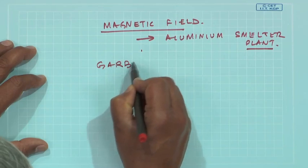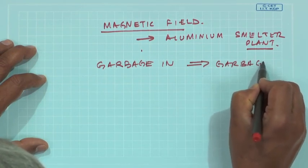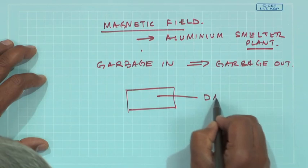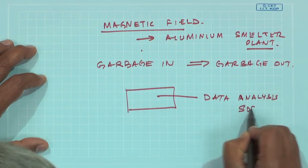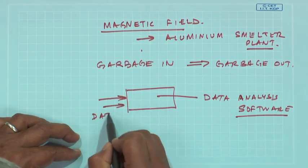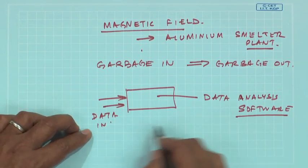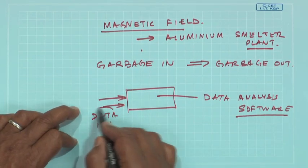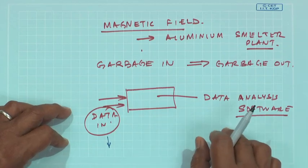As they call garbage in is garbage out, because if you look at the software available today for data analysis, they will work on the data in. Nowadays smart analytics have come up where they can tell you whether the data itself is having some wrong trends or outliers which could be removed, but everything depends on my data. If the data is wrong the analysis would be wrong.